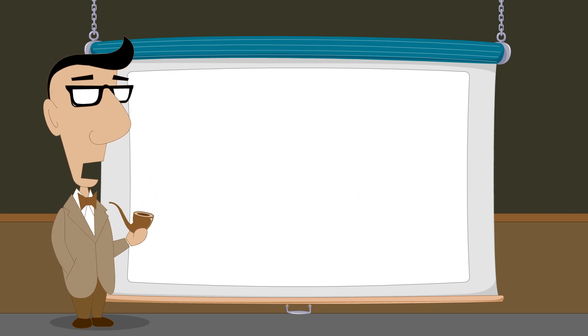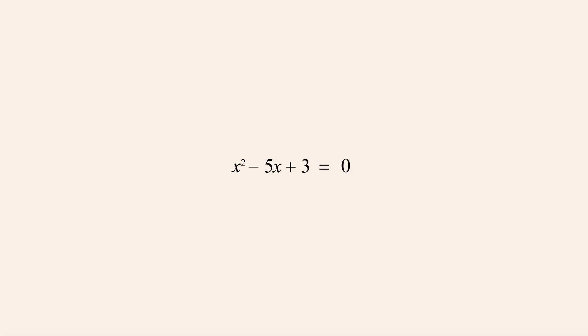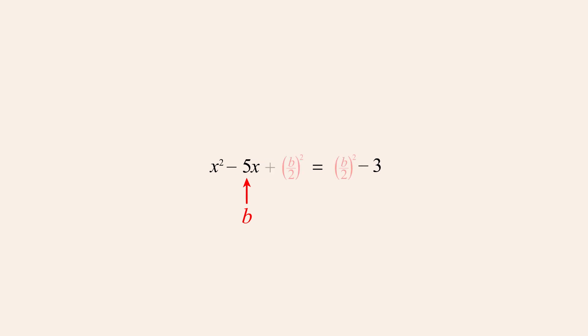So let's try an example solving a quadratic equation where b is negative. In this quadratic expression the x-coefficient b is negative five and the constant term c is three. As we saw in part one, the first step is to move the constant term c to the right side by subtracting it from both sides, and then add b over two-squared to both sides. Since in this example b is negative five, b over two-squared is negative five over two-quantity-squared.